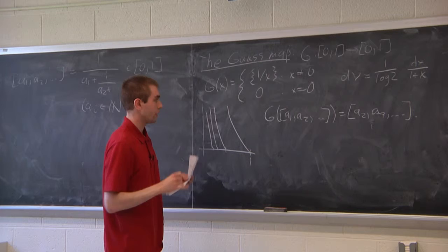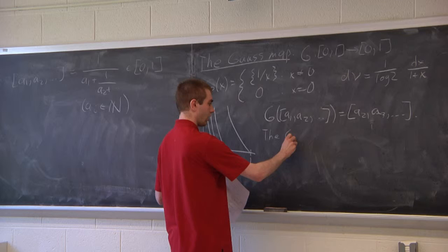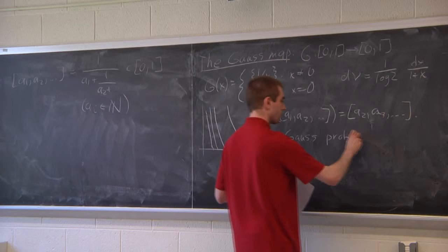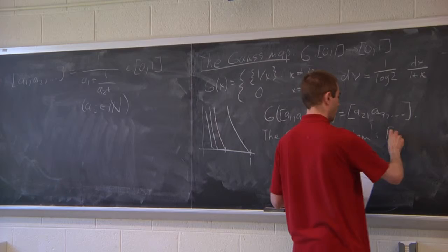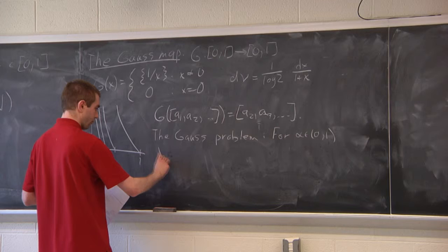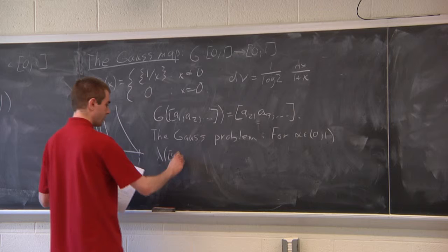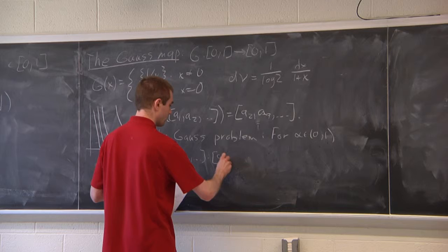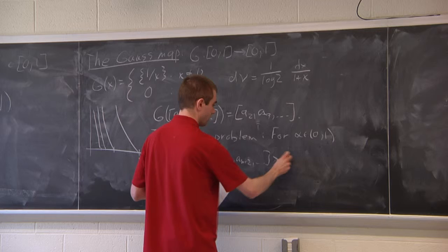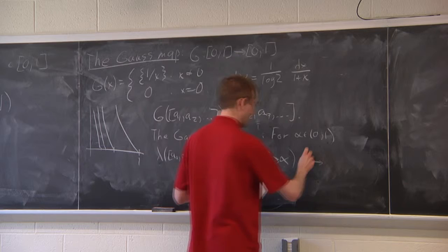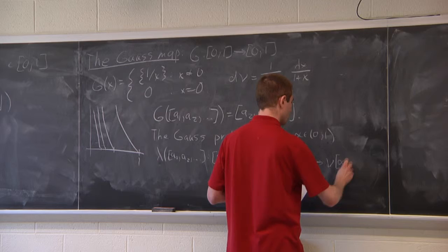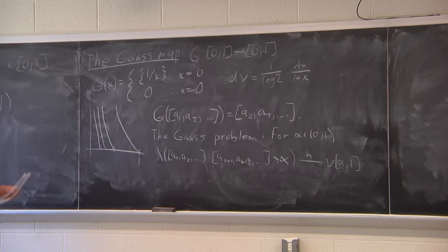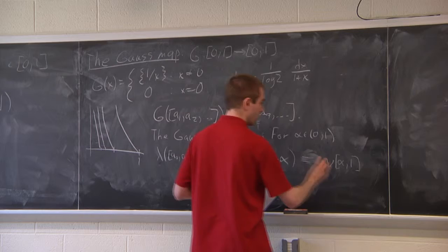This Gauss map has been used to study a problem also named after Gauss. For any α in the interval (0,1), he was able to prove that the Lebesgue measure of the set of all continued fractions such that if you take off the first N digits, the resulting fraction is greater than or equal to α — as N goes to infinity, this converges to the ν-measure of the set [α, 1].